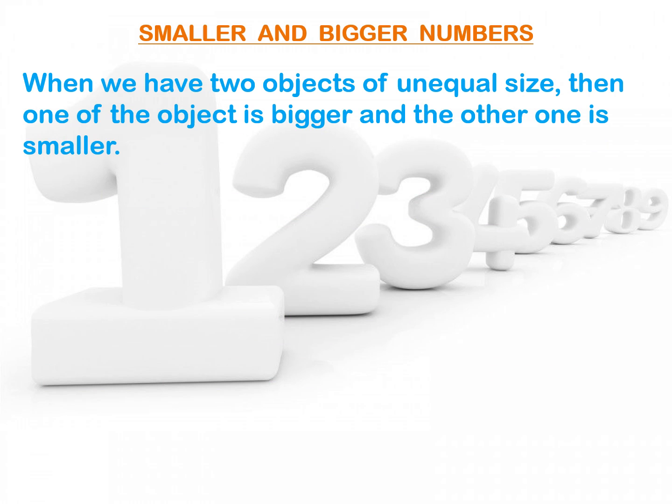What are smaller and bigger numbers? When we have two objects of unequal size, then one of the objects is bigger and the other one is smaller. Now, let us learn about smaller and bigger numbers with the help of an example.